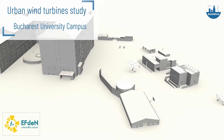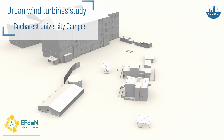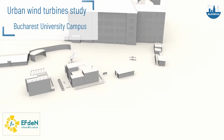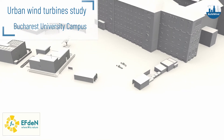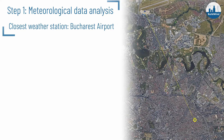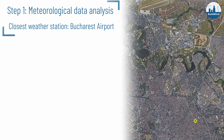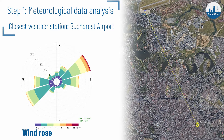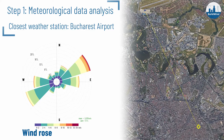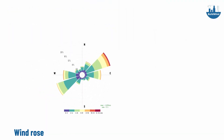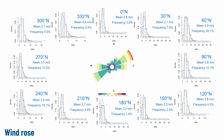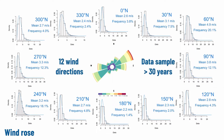In this video we will use results from a study commissioned by Efton for the Bucharest university campus to illustrate our methodology. Our analysis begins with examining the wind data recorded by the nearest weather station. Data must be adapted to the altitude and characteristics of the site that is being investigated.